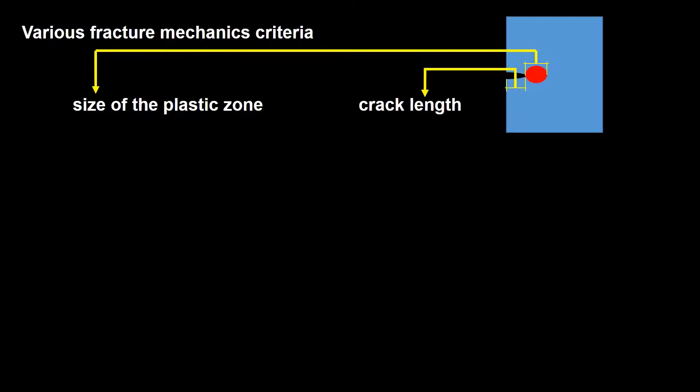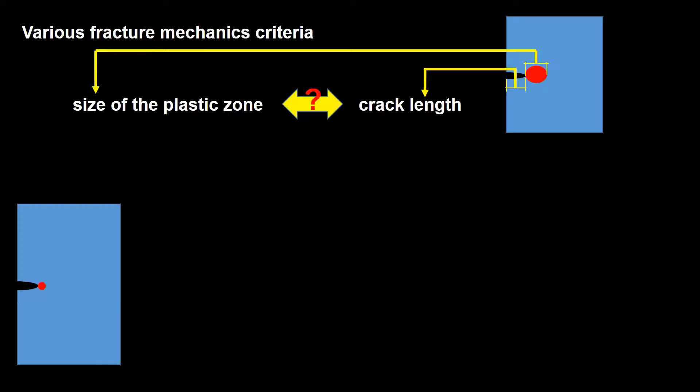Choosing the appropriate fracture mechanics criterion for your problem is the first step in analyzing it. The size of the plastic zone in comparison with the crack length is an important measure for choosing appropriate fracture mechanics criterion. When the plastic zone at the tip of the crack is small relative to the crack length, the stress state at the crack tip is the result of elastic forces within the material and is termed linear elastic fracture mechanics, or LEFM. For example, in a brittle material like glass, linear elastic fracture mechanics theory can be used.